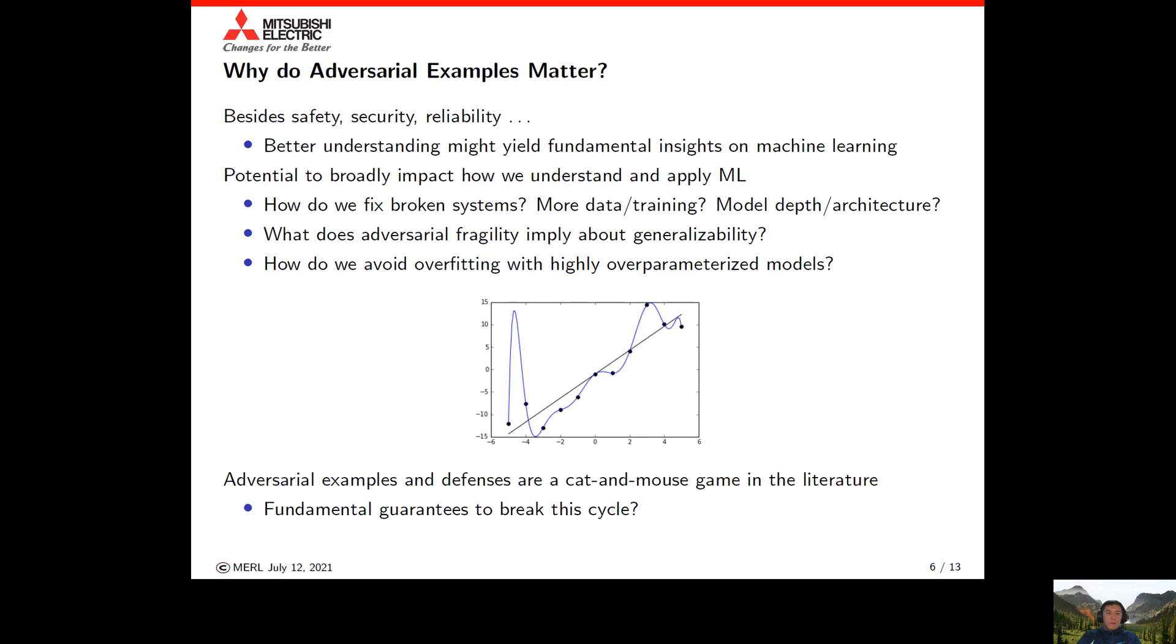Beyond the obvious safety, security, and reliability concerns, I want to talk about why adversarial examples matter, since it might give us better understanding into how we fundamentally use and apply ML. When ML systems don't work, we're left with questions of how to fix them. Do we need more data or more training? Is there something wrong with the model architecture? The existence of fragility to adversarial examples makes us ask questions about generalizability, and how to avoid overfitting with highly over-parameterized models.